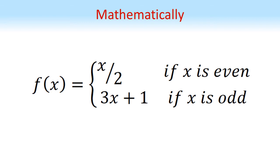Mathematically, we can show the function for the Collatz conjecture as f of x equals x over two if x is even or three x plus one if x is odd.